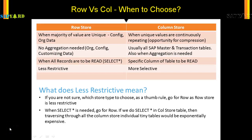Now comes the million dollar question: when to choose row versus column store. When most of the data are unique — say for the config table or value table which has a company code, chart of accounts, or plant — go for the row store.